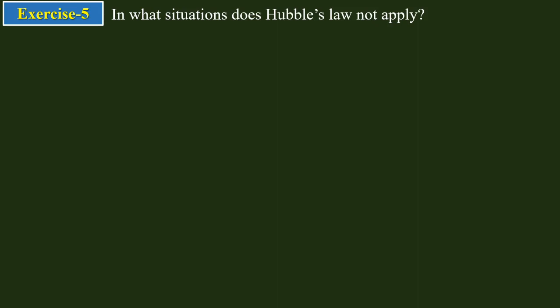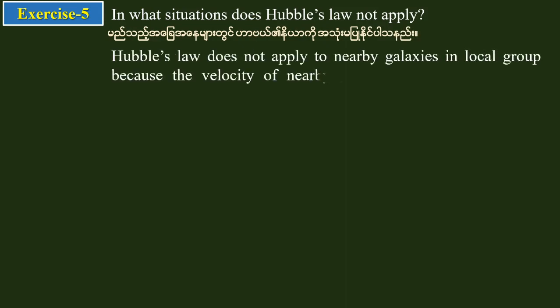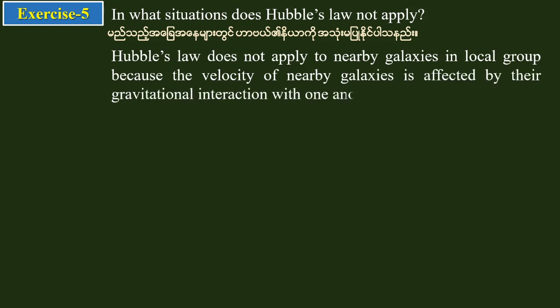Hubble's law does not apply to nearby galaxies, because the velocity of nearby galaxies is affected by their gravitational interaction with one another. So Hubble's law cannot be applied to the local group of galaxies, since their motion is dominated by gravitational interaction rather than the expansion of the universe.